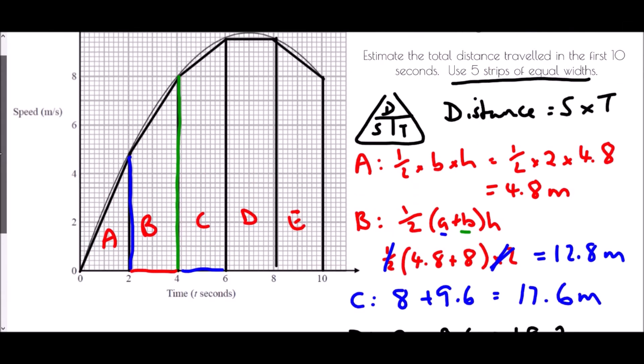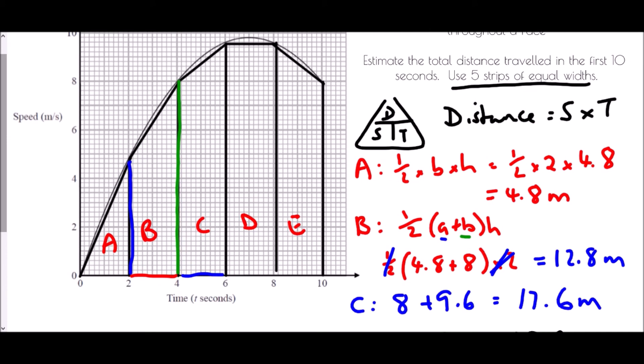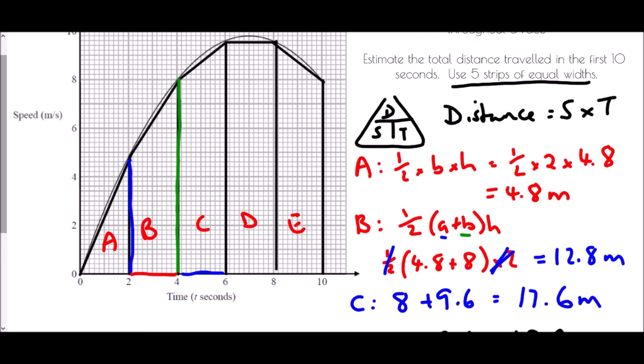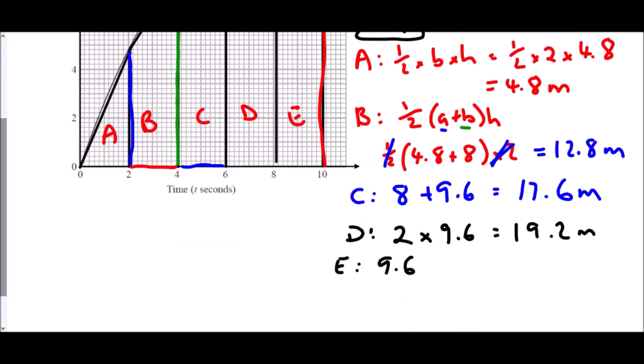And then finally, with E, we have another trapezium. And so again, it's going to be a half, brackets A plus B times H. But again, we've got a half times 2 for the height. And therefore, we can just do our A, which will be 9.6. And add on the height at the very end. And the height at the very end is at 8. And so we have 17.6 metres.